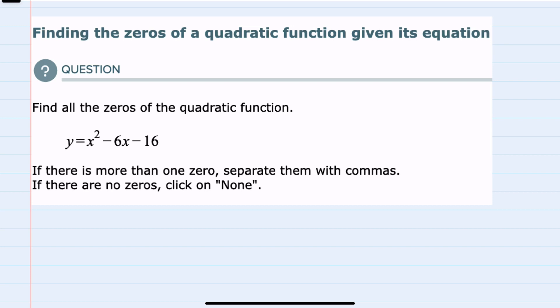To find those zeros, I know that will be the x values that result in a zero output. So that will be where x squared minus 6x minus 16 equals 0.